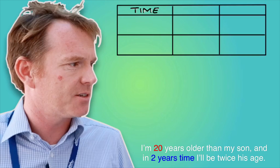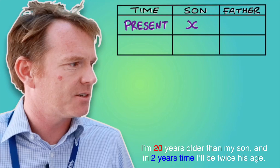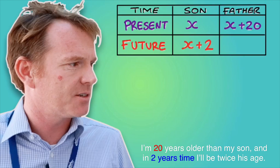So you're 20 years older than your son and in two years time you'll be twice his age. Let's work it out. We start off by doing a table of values. I need time because we're dealing with the present and the future — the son's age and the father's age. At present, let's agree the son's age is X. That means the father is X plus 20. In two years time, the son will be X plus 2 and the father will be X plus 20 plus 2, going two years into the future.